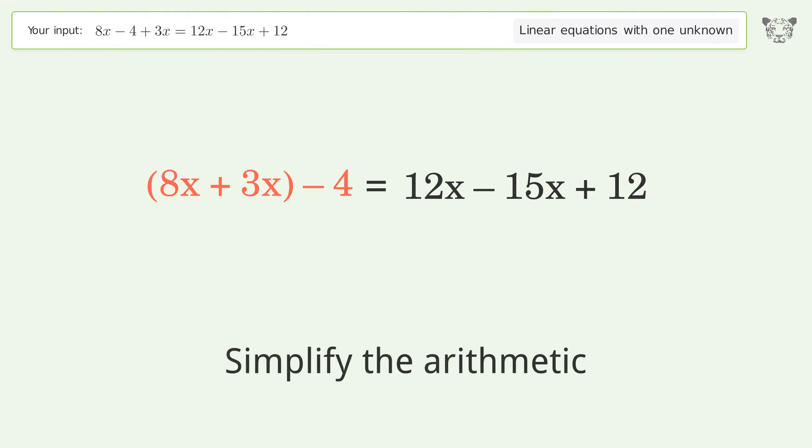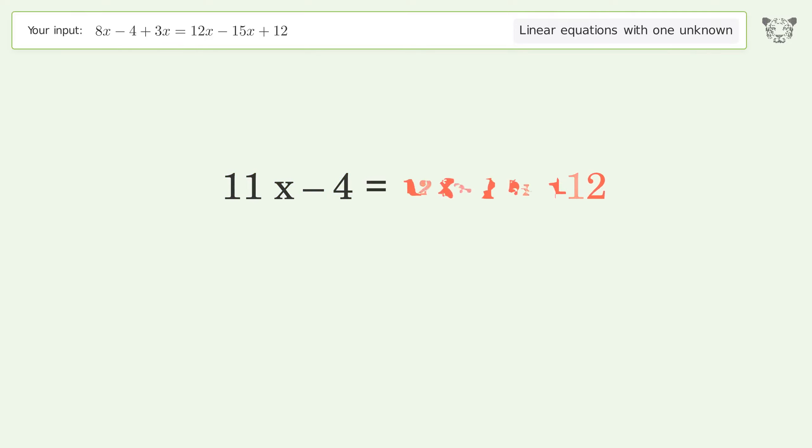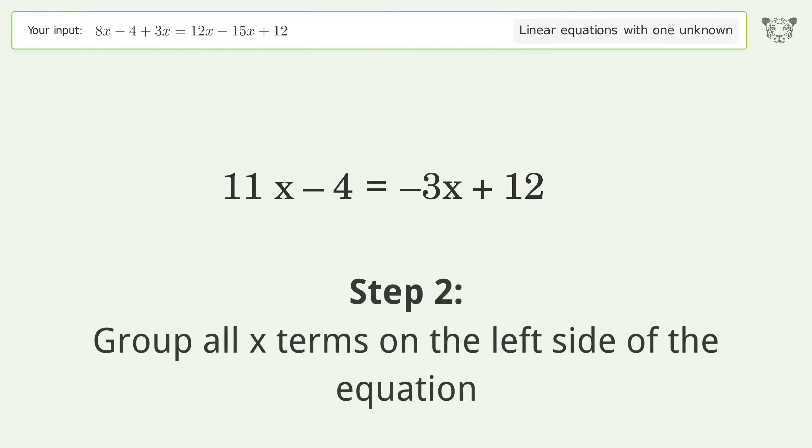Simplify the arithmetic. Group all x terms on the left side of the equation. Add 3x to both sides.